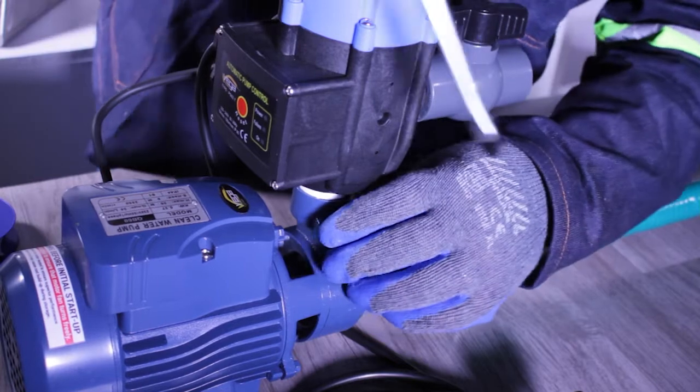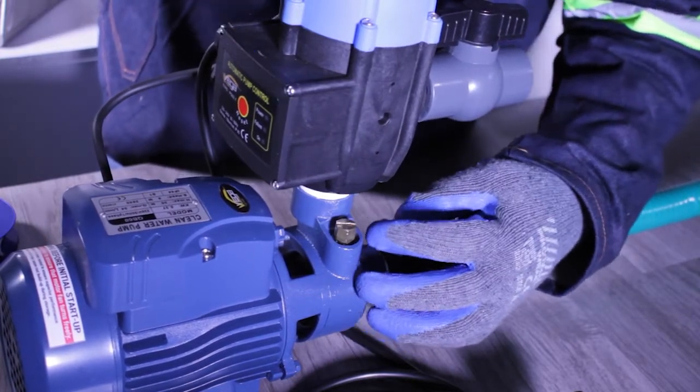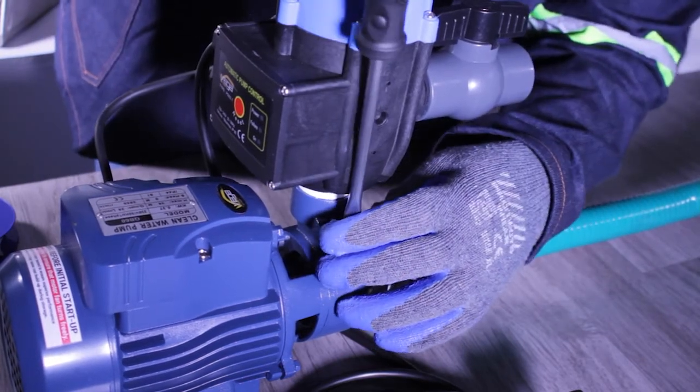Unscrew the bleeding screw located on top of the pump volute and once the water is flowing freely, close and tighten.